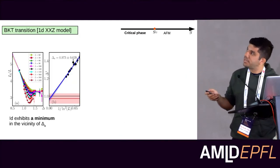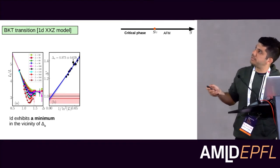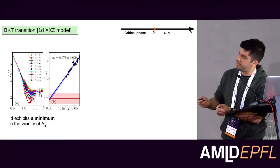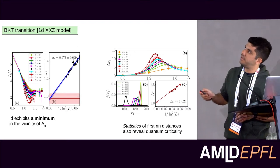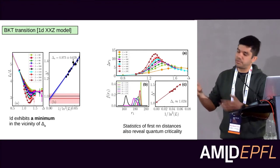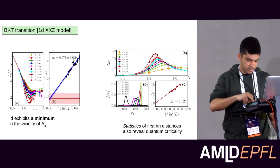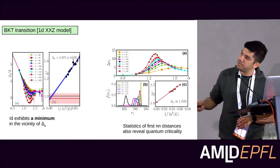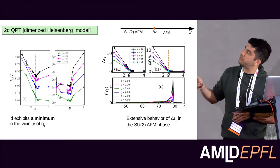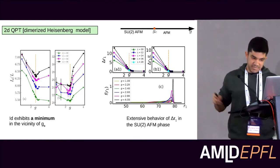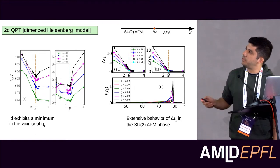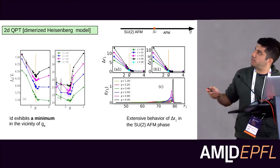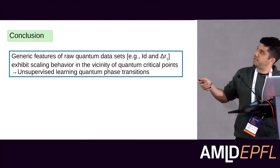The scaling behavior is also visible in delta-one, the variance of the distance distribution, which also shifts with system size and characterizes the transition. We also applied this to the BKT transition of the 1D XXZ model, finding essentially the same results: a minimum in intrinsic dimension near the transition, a shift with system size, and a peak in delta-one. For a 2D system, the calculation is harder, but the key difference is that delta-one shows extensive behavior inside the ordered phase.